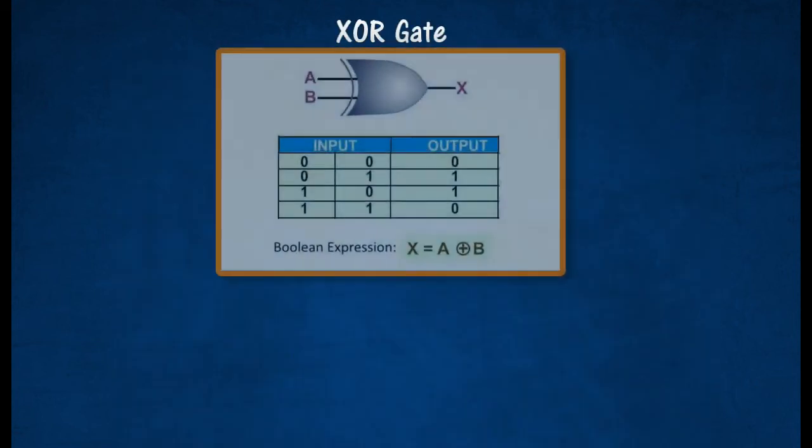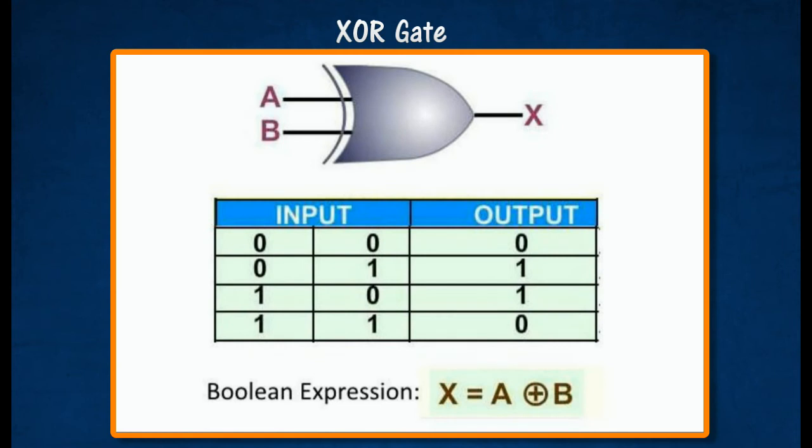The exclusive OR gate acts in the same way as the logical EITHER slash OR. The output is true if either, but not both, of the inputs are true. The output is false if both inputs are false or if both inputs are true. Another way of looking at this circuit is to observe that the output is 1 if the inputs are different, but 0 if the inputs are the same.